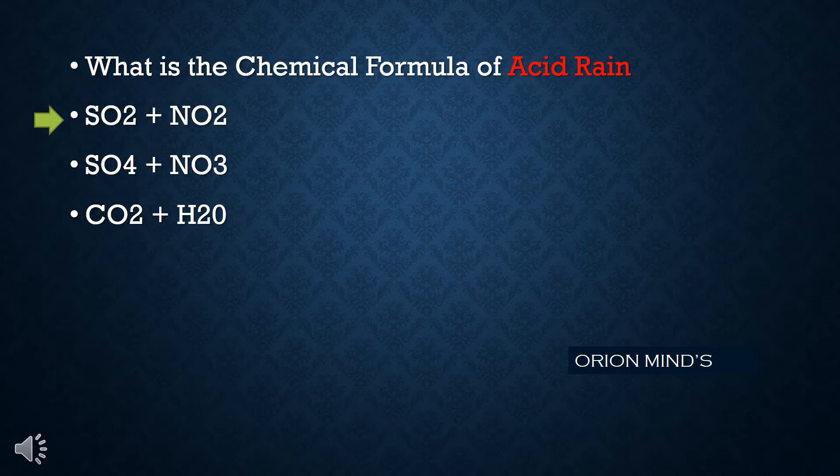What is the chemical formula of acid rain? Acid rain is caused by sulfur dioxide plus nitrogen dioxide.